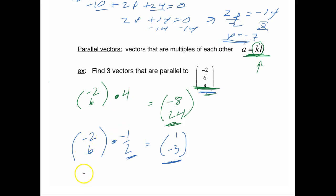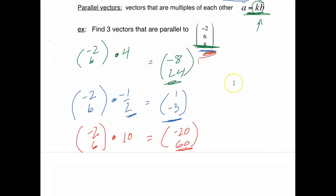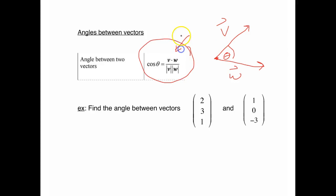The final advanced vector operation is finding the angle between two vectors. Given vectors v and w, there's a formula: cosine theta equals the dot product of v and w divided by the magnitude of v times the magnitude of w. We know how to do everything in this formula — the dot product we just did, and the magnitudes we covered in the last video. Let's do an example.